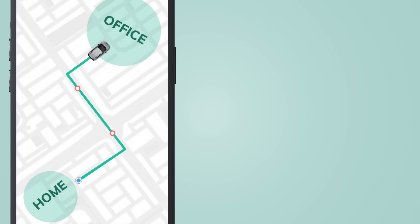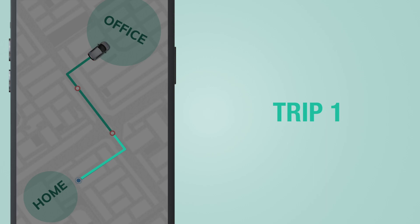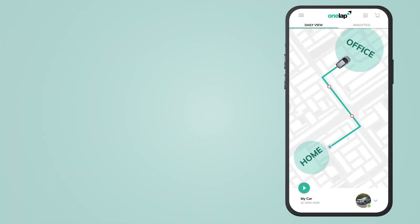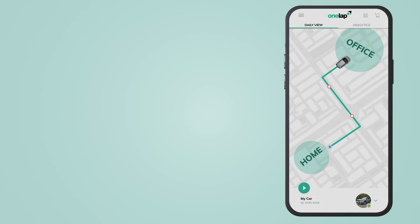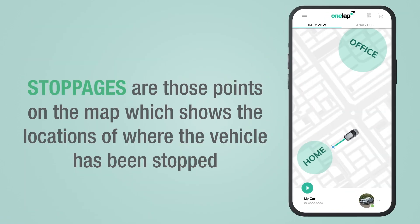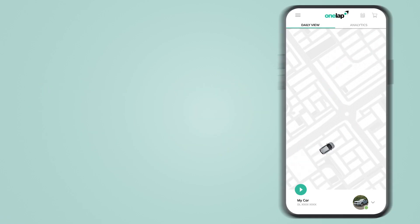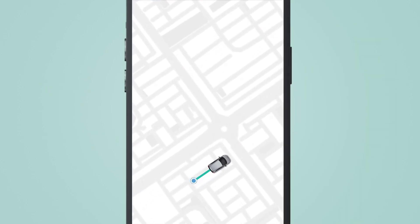For example, this route journey has three trips: trip one, trip two, and trip three. In this video, we will talk about stoppages. Stoppages are those points on the map which show the locations of where the vehicle has been stopped during the journey.